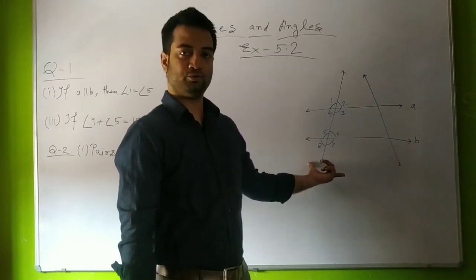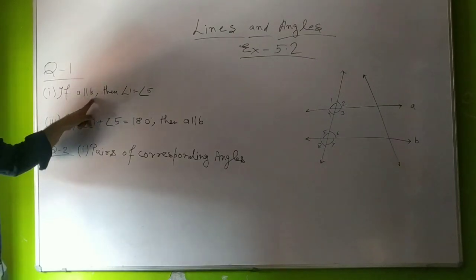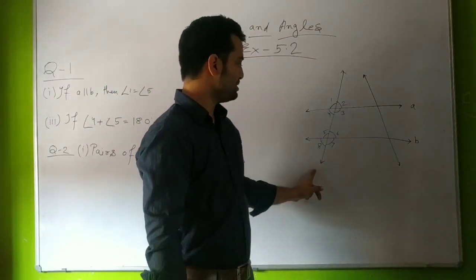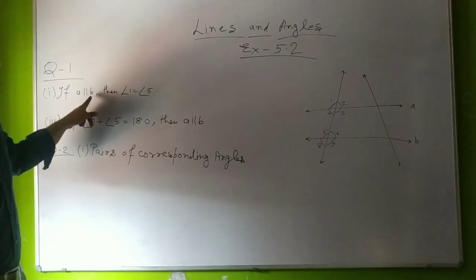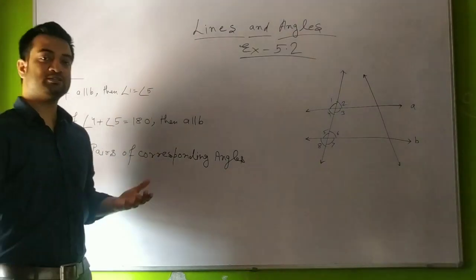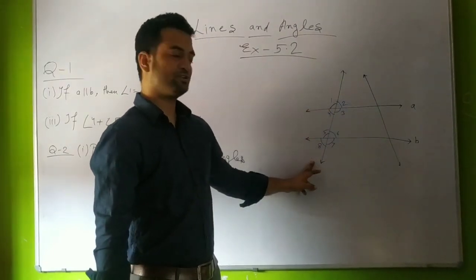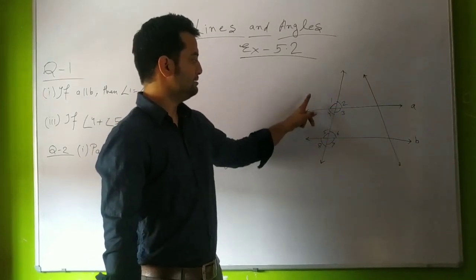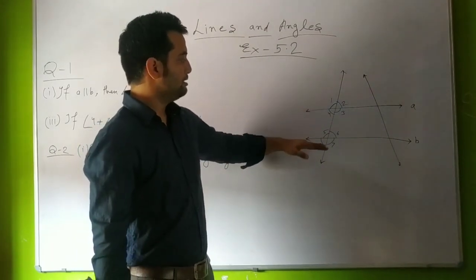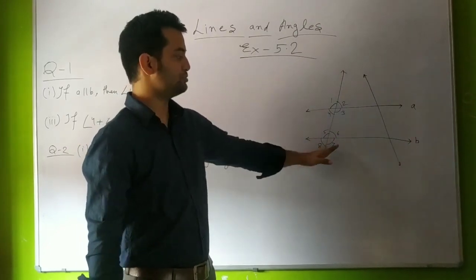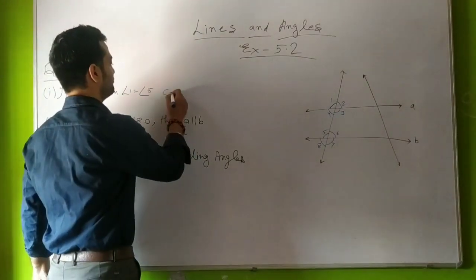The first question from question number one is: if A is parallel to B — two lines A and B are given as well as two transversals. The question asks that if A is parallel to B, then angle 1 will be equal to angle 5. We have to state the name of the property used. If you look at the figure, A and B are parallel lines and there is a transversal, giving eight angles on both lines. Angle 1 and angle 5 are on different line segments but have the same position with respect to the transversal, so angle 1 and angle 5 are corresponding angles.